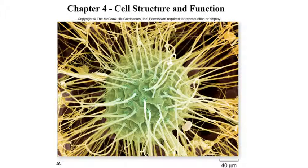Welcome to chapter 4. In this chapter we're going to talk about cells. Now you've already seen some cells in the lab — elodea cells, onion cells, and your own epithelial cells from the inside of your cheek. But now we're getting into some more details about structures we see within the cells.